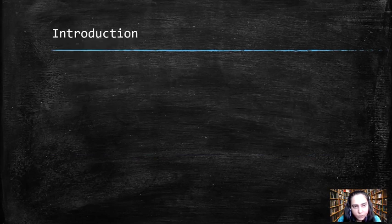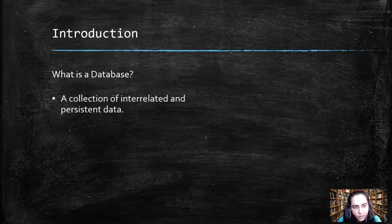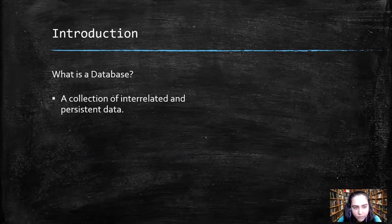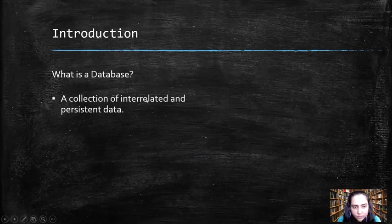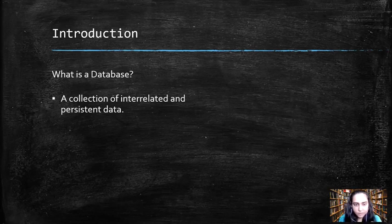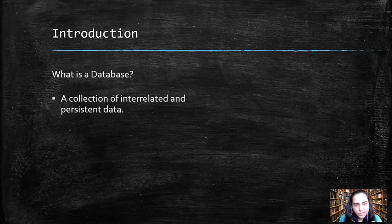So let's start with the definition of a database. A database is a collection of interrelated and persistent data. Interrelated means data that is connected with each other. So you'd want data that tells you a story — when you say a database, all the data inside is connected.